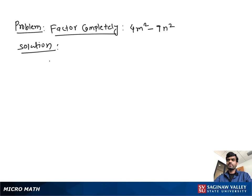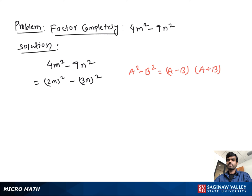Factor completely 4m squared minus 9n squared. If we see both terms, they look like perfect square forms. So you can write this as 2m all squared minus 3n all squared. If we see, it looks like the a squared minus b squared form, which equals a minus b times a plus b.